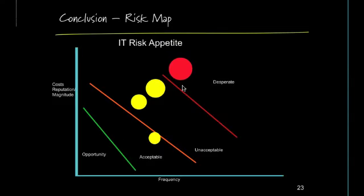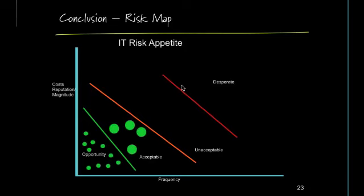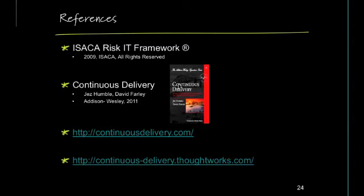When you have huge pieces of work, you have higher risks to your costs, reputation, and magnitude of impact if things go wrong. What continuous delivery does is allow you to move everything into smaller pieces with tighter control on how things are done, giving you a better chance to realize opportunities and making larger pieces more acceptable. References include the ISACA IT risk framework, the book Continuous Delivery by Jez Humble and Dave Farley, Jez's website ContinuousDelivery.com, and a microsite on ThoughtWorks.com that has a lot of information.